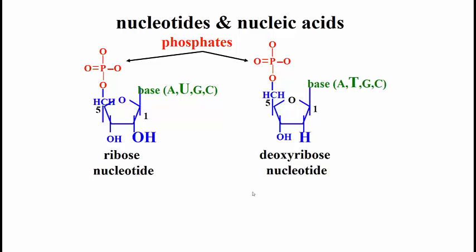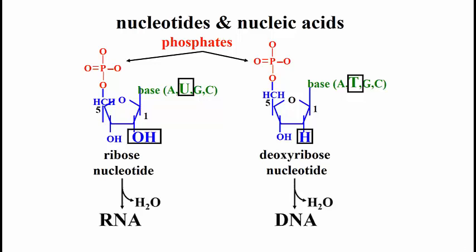This slide is a reminder of the differences between RNA and DNA nucleotide monomers. Nucleotides consist of the bases adenine, uridine, cytosine, and guanine in RNA, and adenine, thymine, cytosine, and guanine in DNA. There is also a 5-carbon sugar — ribose in RNA and deoxyribose in DNA — and one or more phosphates.